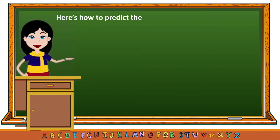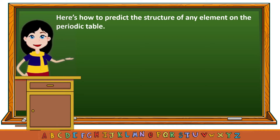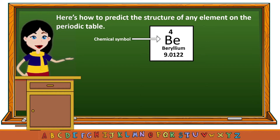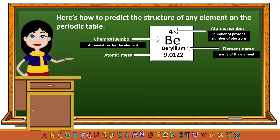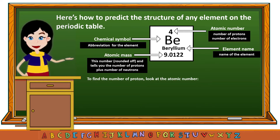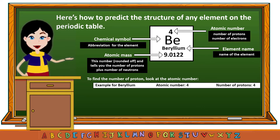Here's another example of how to predict the structure of any element on the periodic table. Let us use beryllium. Be is the chemical symbol, and beryllium is the name of the element. Of the two numbers, 4 and 9.0122, the smaller number is the atomic number. The atomic number of beryllium is 4, and 9.0122 is the atomic mass. To find the number of protons, look at the atomic number — the number of protons of beryllium is also 4.